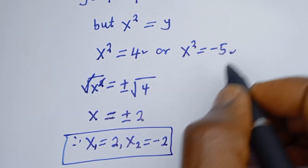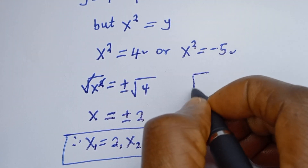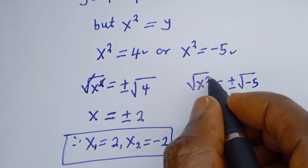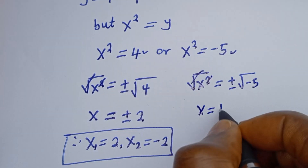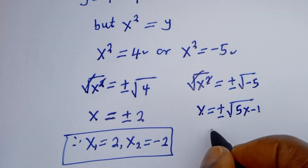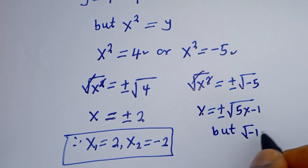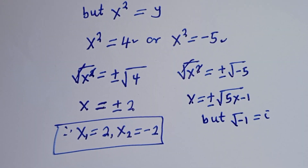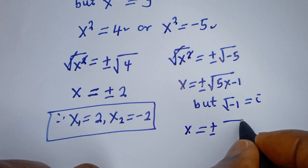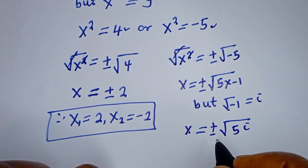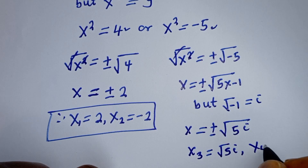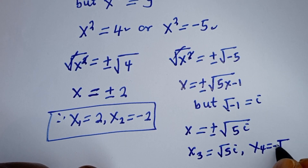From the second case, s squared is equal to minus 5. Taking the square root of both sides, s is equal to plus or minus the square root of minus 5, which can be written as plus or minus the square root of 5 times minus 1. This gives S3 is equal to plus i root 5 and S4 is equal to minus i root 5.